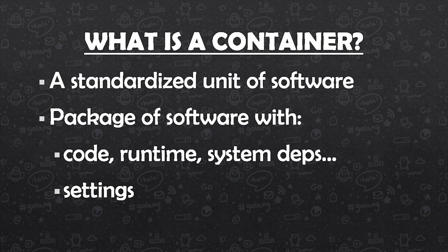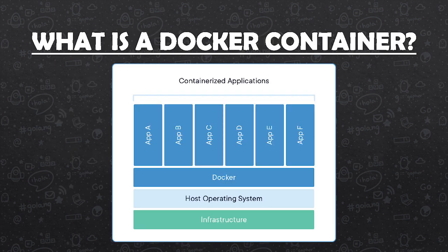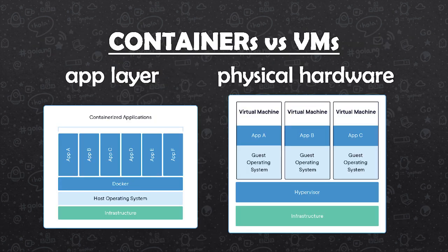What is a Docker container? A container is a standardized unit of software — a way to package our applications in an isolated environment. It's just a container running on top of Docker. In comparison with virtual machines, which are an abstraction of physical hardware, containers are an abstraction at the application layer. So they are a less heavy way to get isolated environments for our applications.